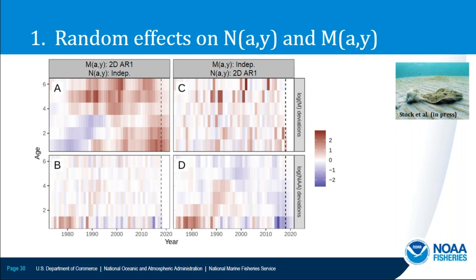Next question: did we apply this model to any forage species, for example herring or mackerel? Yes — one of the five stocks in the WAM description paper is Icelandic herring, and another is butterfish, which is semi-pelagic, semi-demersal.